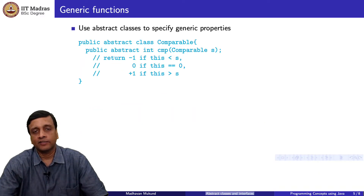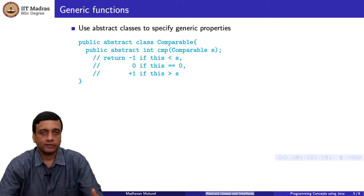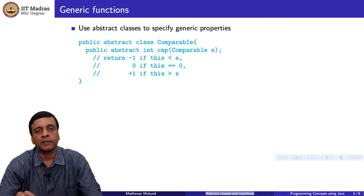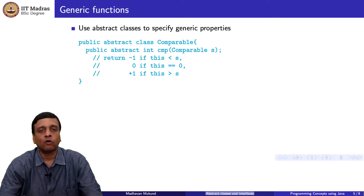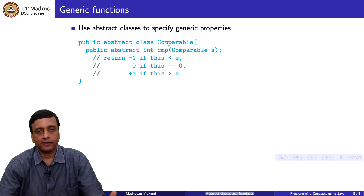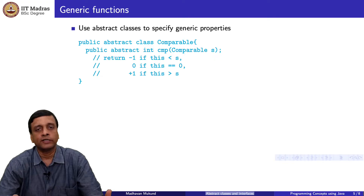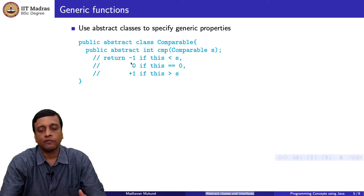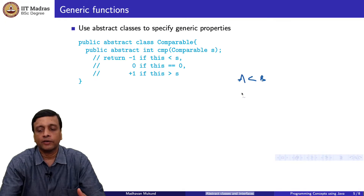We can extend this idea a little further. We can use abstract capabilities to define some kind of generic properties. Consider sorting — when we sort an array, we want to take any two elements and compare them: we want to know whether one is bigger than the other. There are three possible outcomes of a comparison. Suppose I have a and b: when I compare a to b, a could be strictly smaller than b, a could be equal to b, or a could be strictly greater than b. There is a standard convention for this kind of comparator function: if a is less than b, return minus 1; if a is equal to b, return 0; if a is greater than b, return plus 1.